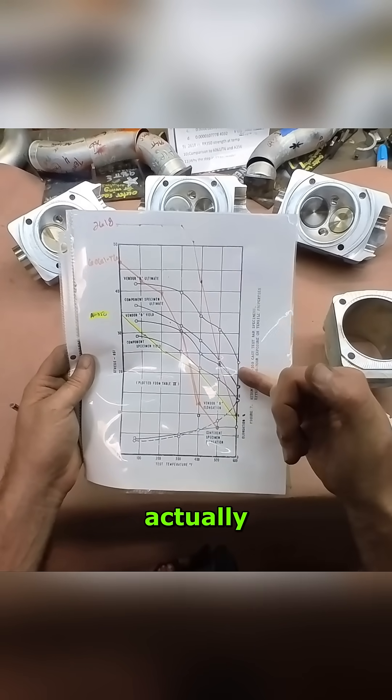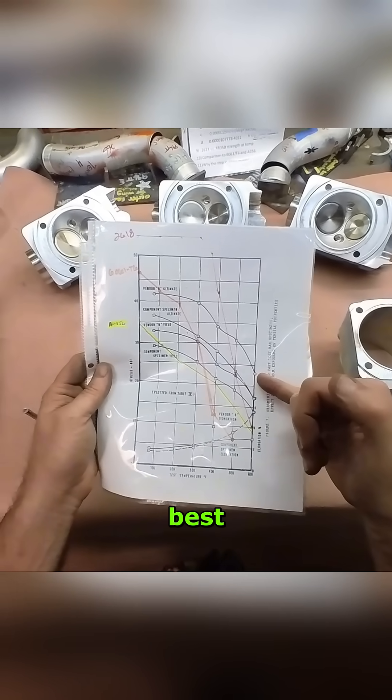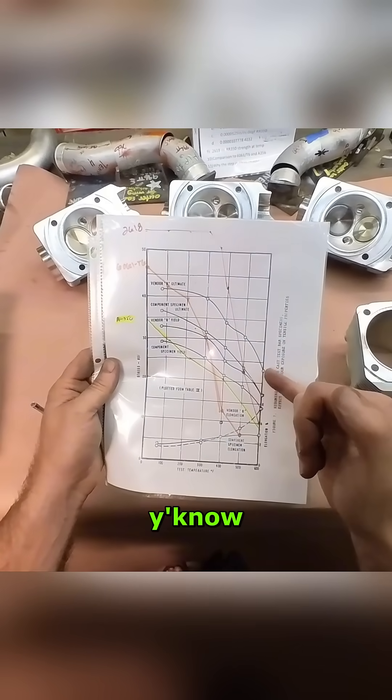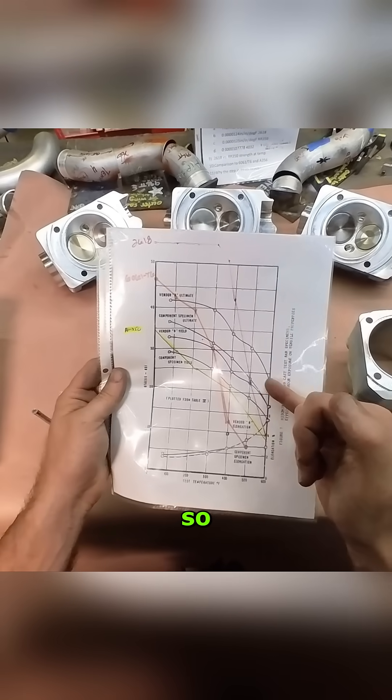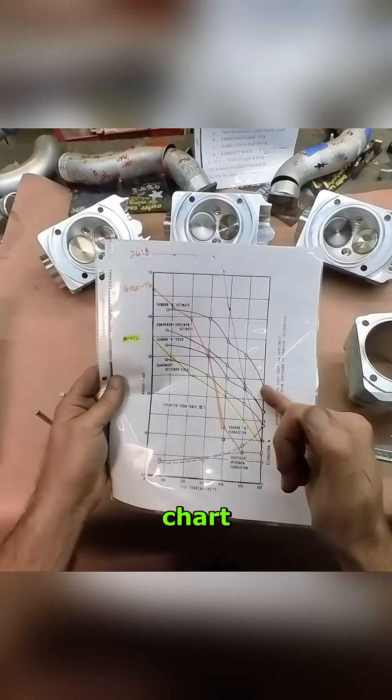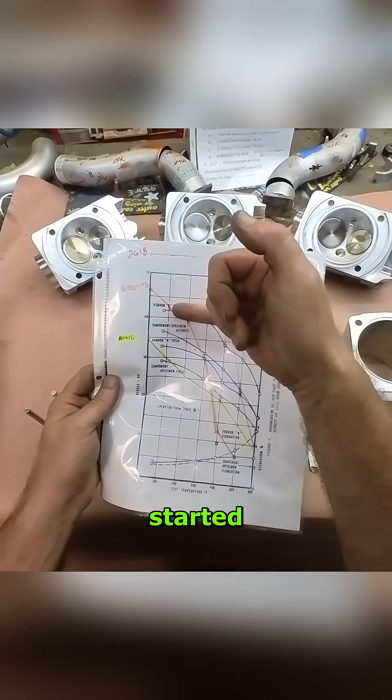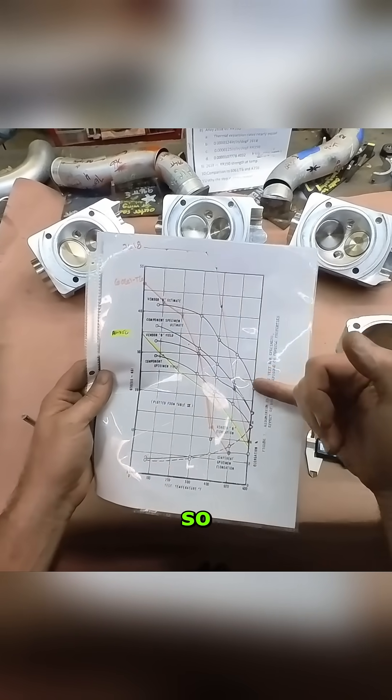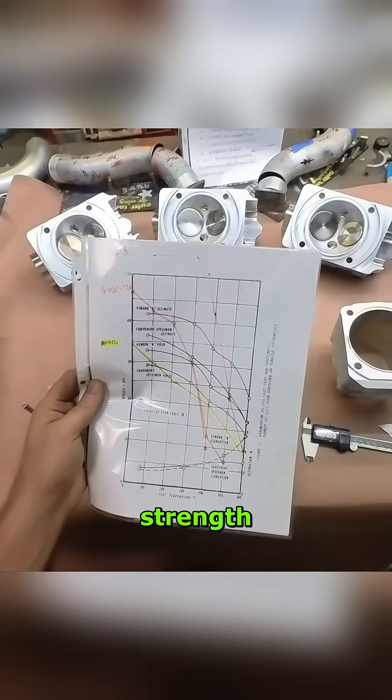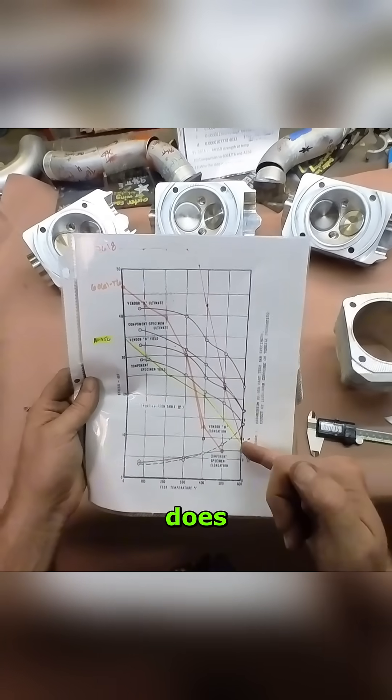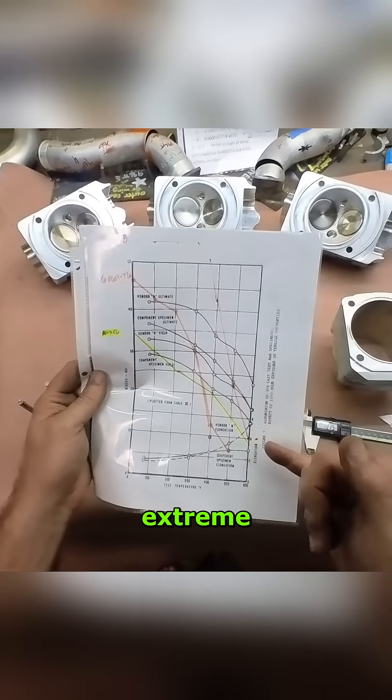Whereas the RR350 is actually still hanging in there. The best of the best is still almost 25, like 23 or so ksi on this chart. Now it's not near the 55, but it only started at 42 ksi, so it's not losing its strength nearly as fast as the 2618 does. But again, that's extreme conditions.